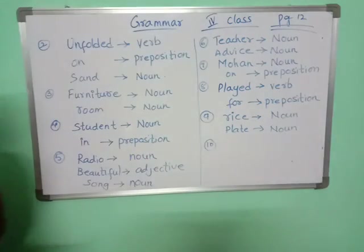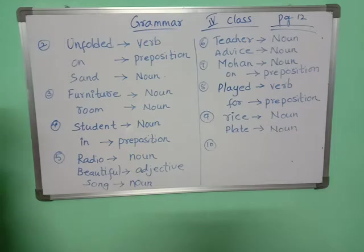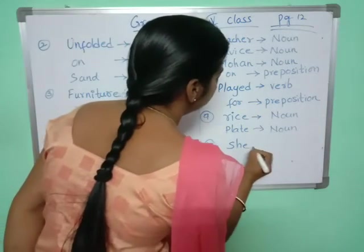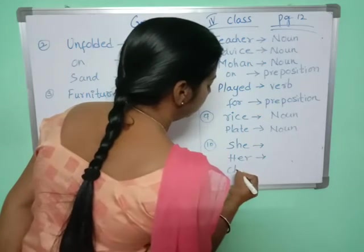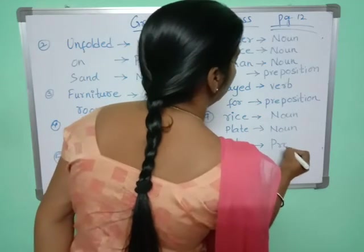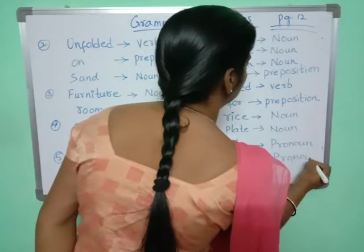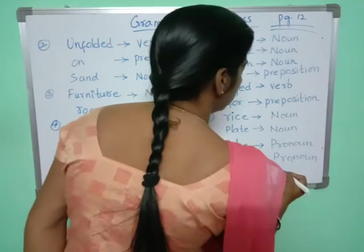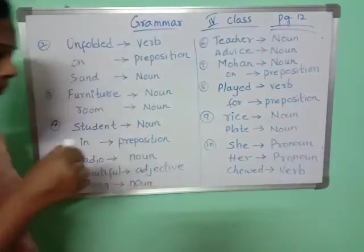Tenth one: She put the jelly bean into her mouth and chewed. The underlined words are 'she,' 'her,' and 'chewed.' So 'she' is a pronoun, 'her' is also a pronoun, and 'chewed' is a verb — it is an action verb.